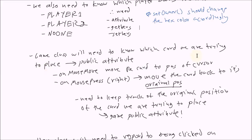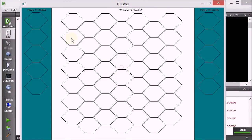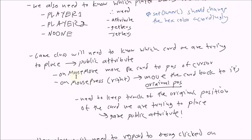The game class will need to know which card we are trying to place. When we click on a card, the game class needs to remember that this is the card we clicked on, so we need an attribute for that. When we move the mouse, the game class will make that clicked card follow the mouse — it's kind of a drag and drop thing. When we right-click the mouse, it should cancel the placing and move the card back. Therefore we need to keep track of the original position of the card we're trying to place.